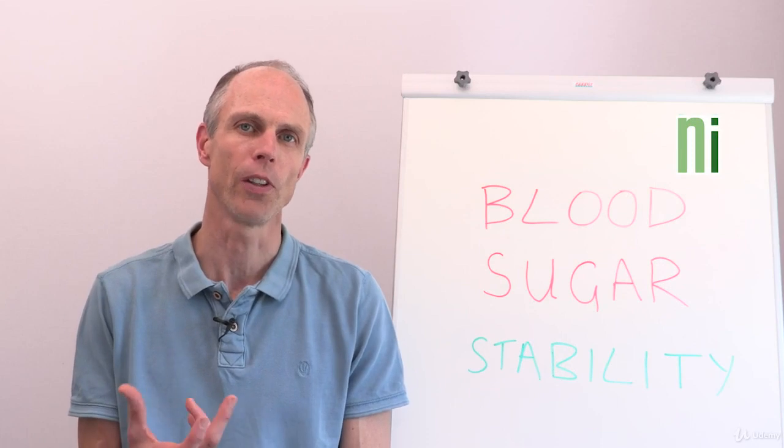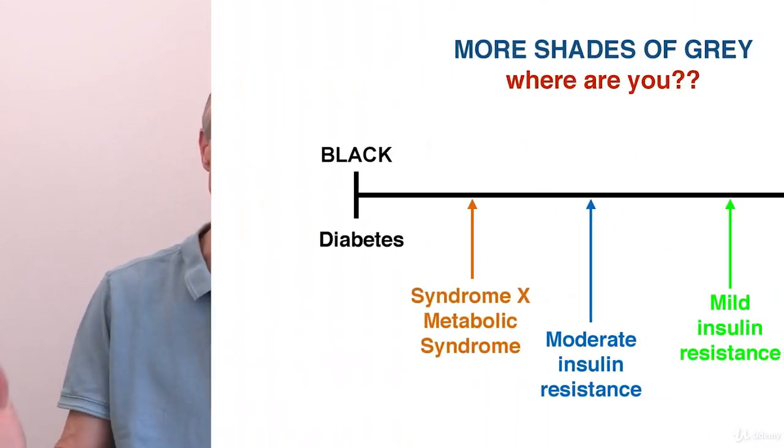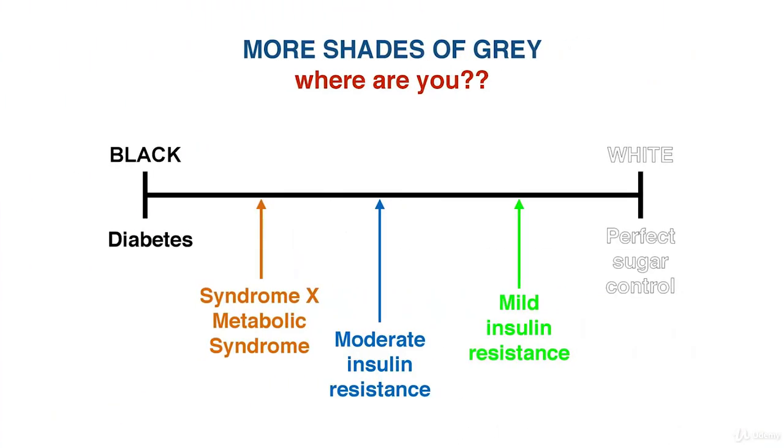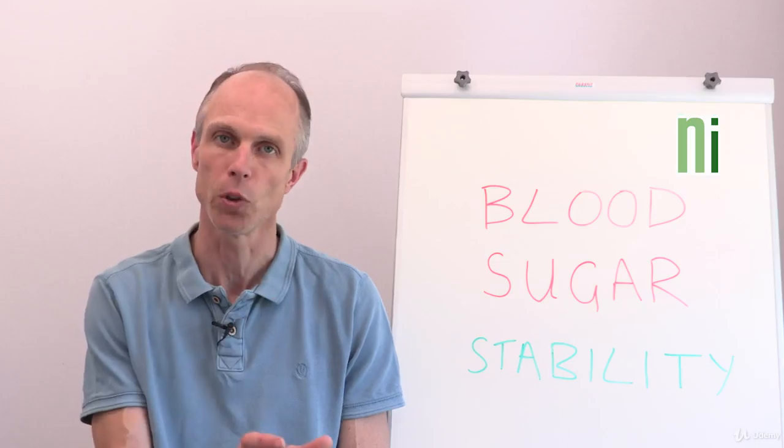I'm going to start this presentation with another shade of grey - a black-white spectrum. This time white is the perfect control of blood glucose, which doesn't really exist, and black represents full-blown diabetes, type 2 diabetes.